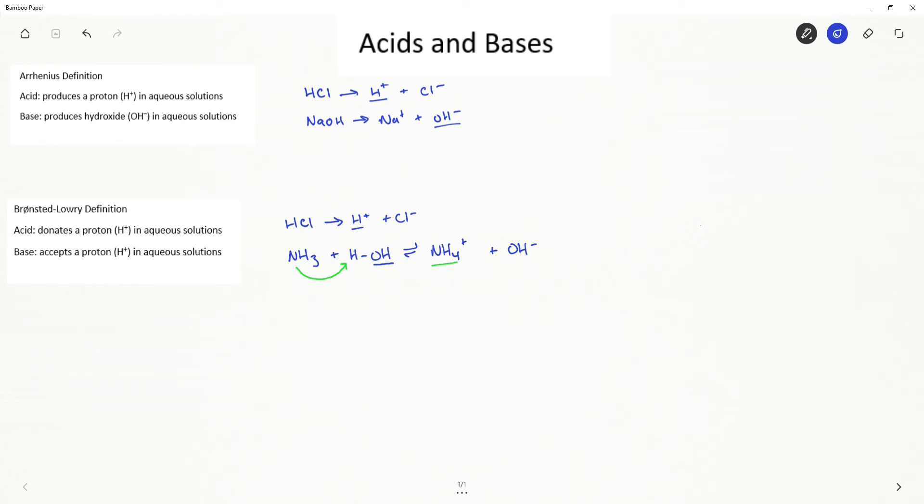There is one more definition that I want to go over and that is the Lewis definition for acids and bases. And yes, this is the same Gilbert-Lewis of Lewis structure fame. Now for the Lewis definition, an acid is going to accept an electron pair and a base is going to donate an electron pair.